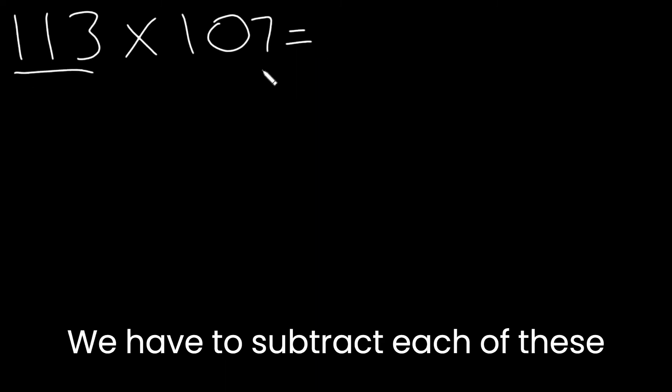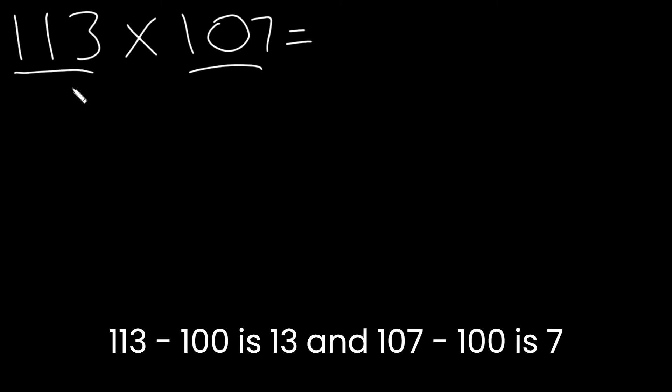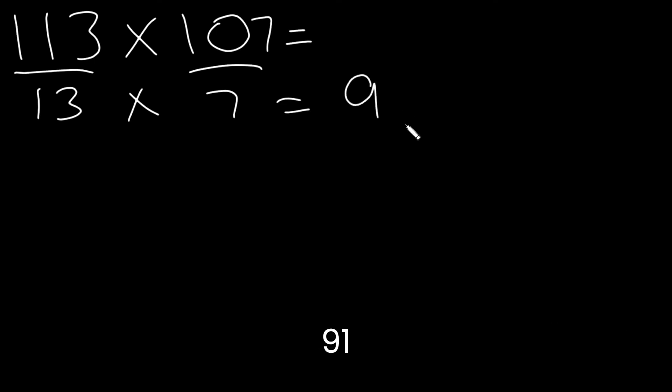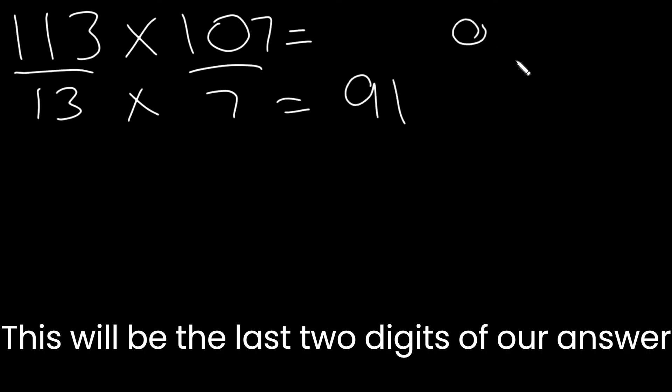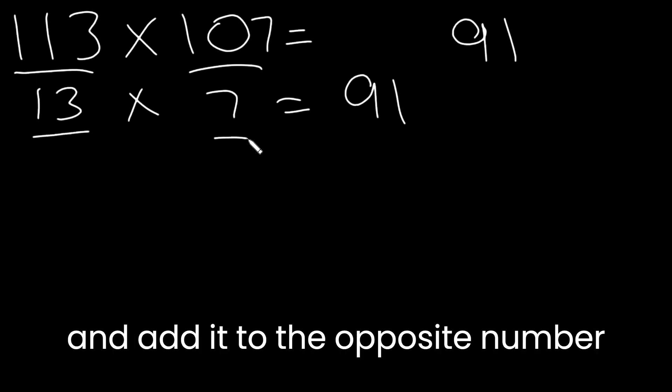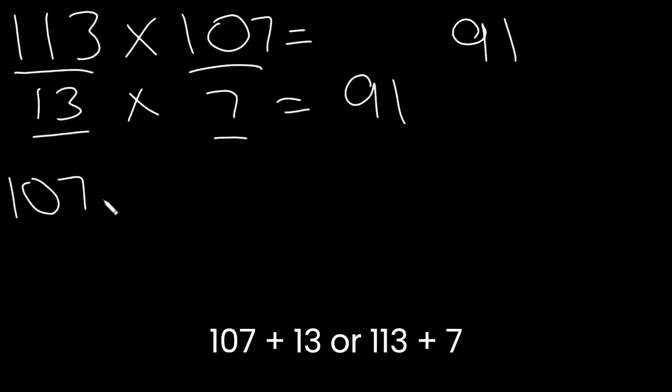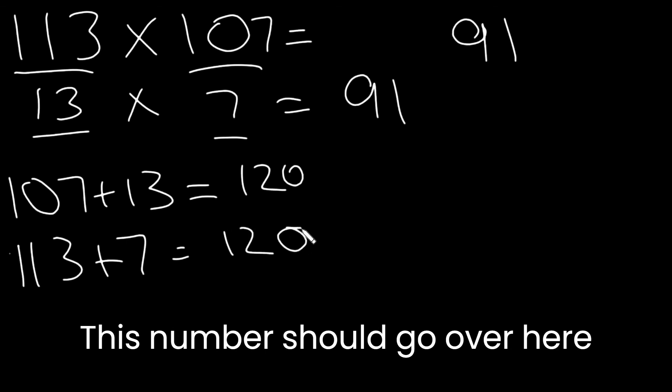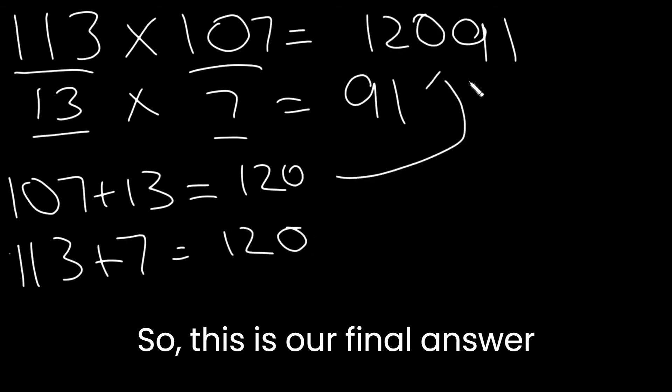We have to subtract each of these numbers with 100. 113 minus 100 is 13. And 107 minus 100 is 7. Multiplying these two together gives us 91. This will be the last two digits of our answer. Then we take either of these and add it to the opposite number. So we either do 107 plus 13 or 113 plus 7. The answers will both be 120. This number should go over here. So this is our final answer.